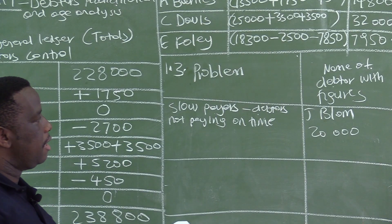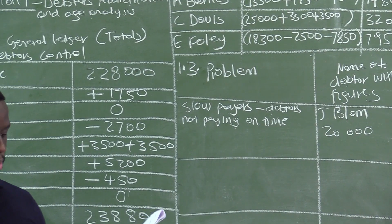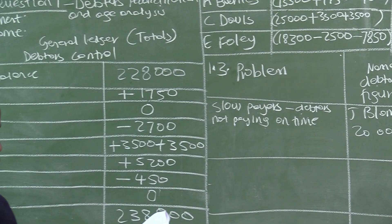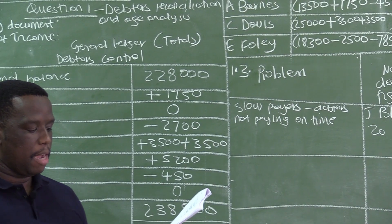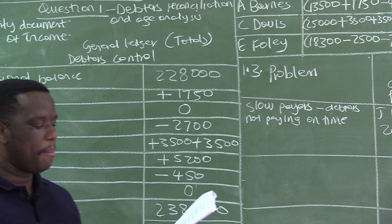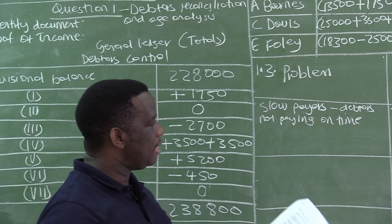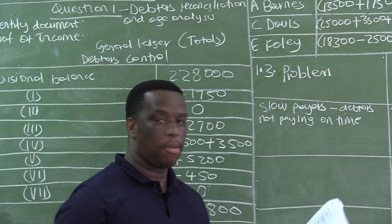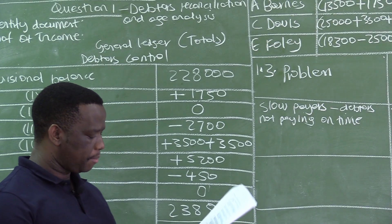This debtor is a slow payer. There are also others — if you look at Omak, there is an amount of R4,000 recorded under more than 90 days. So we can see there is a problem of debtors who are not paying on time.